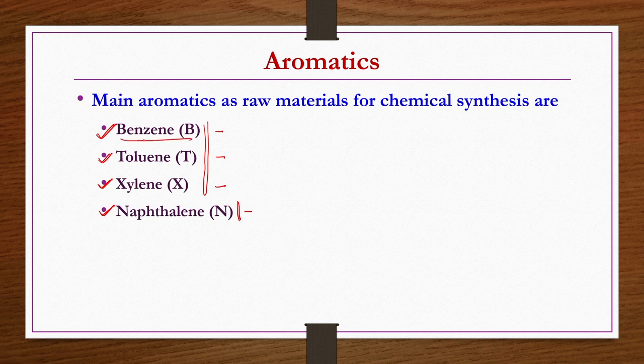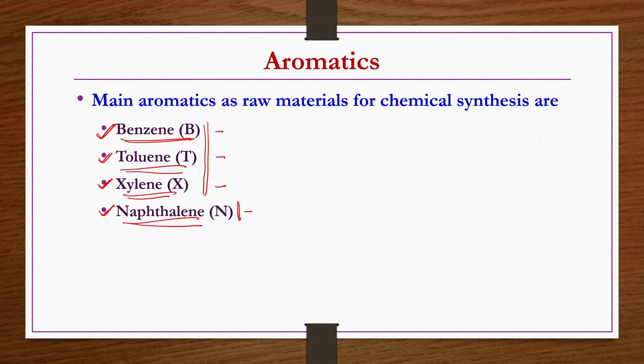How to produce these aromatics is also important. Two important sources are natural sources: oil and coal. When we studied production of ethylene, acetylene, and propylene by steam cracking of hydrocarbons, different types of aromatics are also produced. In the petroleum industry chapter, processes of reforming, isomerization, and hydro dealkylation were discussed. Some components can be hydro dealkylated to produce these aromatics.